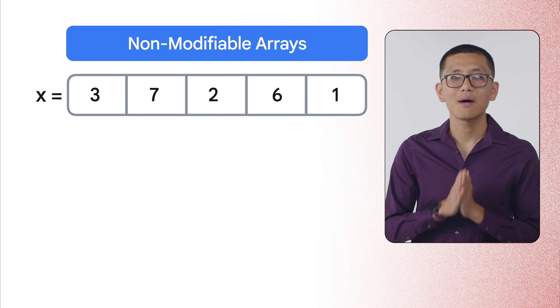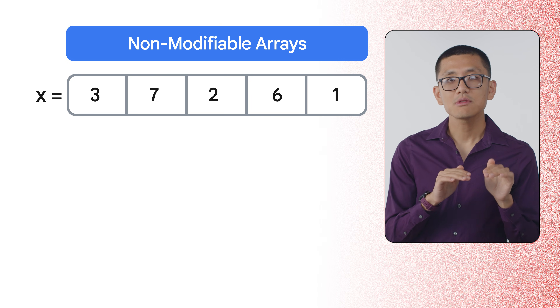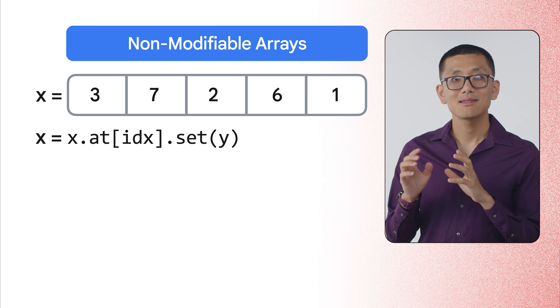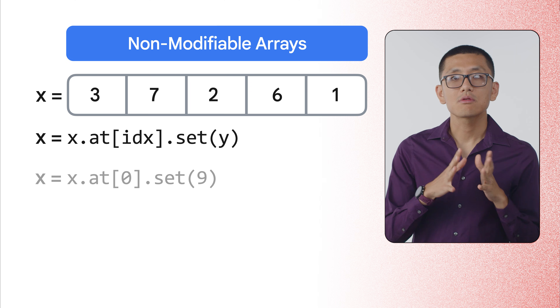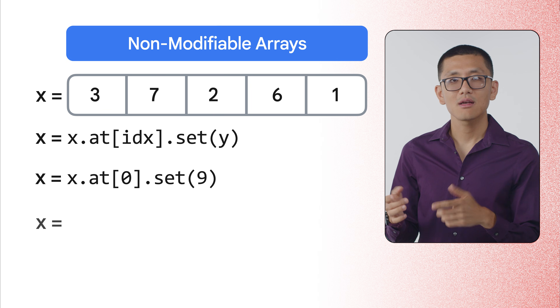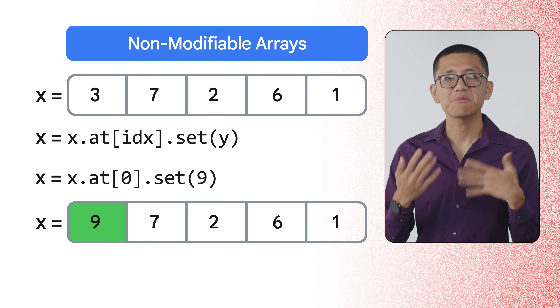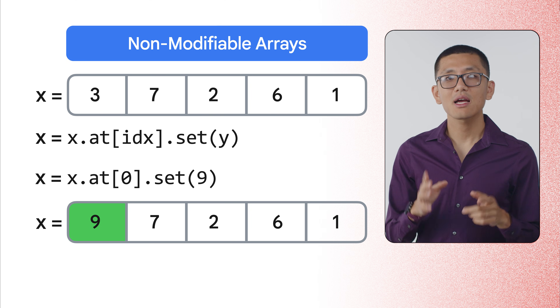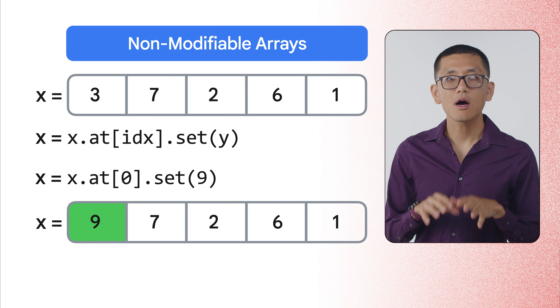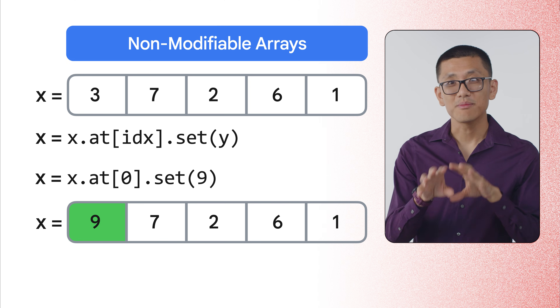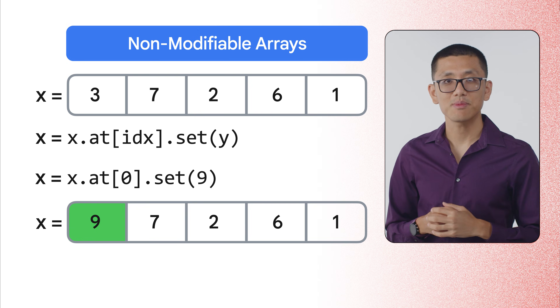JAX arrays cannot be modified in place. It uses operations like x.at[index].set(y) to create a new array with those modifications, leaving the original untouched. While this code might seem less performant when you and I look at it, it allows JAX's compiler to perform deep optimizations, often avoiding array creation intermediaries and leading to significant speed gains. Once you adjust to the idea of everything must be pure functions, many of the rest of the ideas behind JAX kind of just flow out naturally.